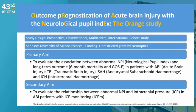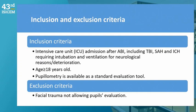We started a study called the Orange Study, published in Lancet Neurology last autumn. It's a prospective, observational, multi-center study aimed at finding any association between pathological MPI and long-term outcome at six months in three pathologies — TBI, subarachnoid hemorrhage, and intracerebral hemorrhage. A secondary aim was to define the relationship between ICP and MPI using granular data collected every four hours for the first week.